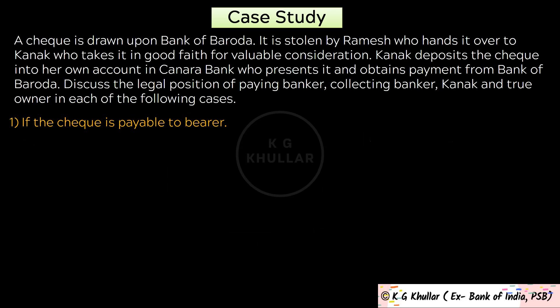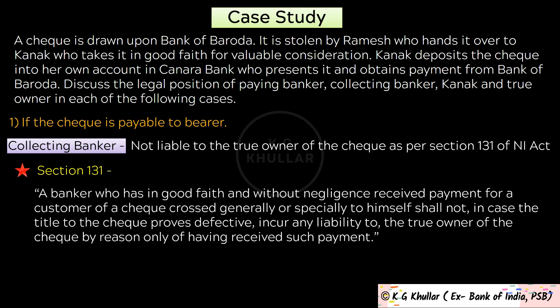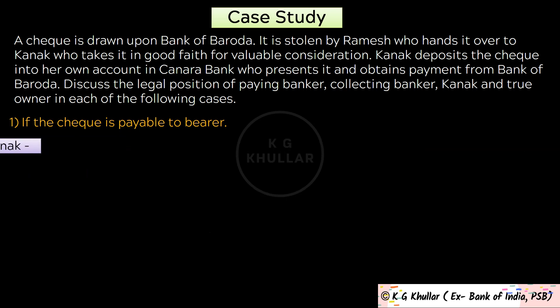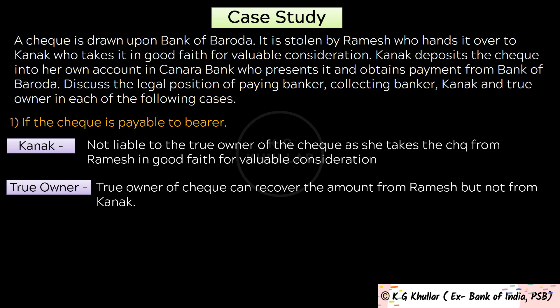The collecting banker also does not incur any liability to the true owner as per section 131. Section 131 of the Negotiable Instruments Act deals with non-liability of a banker receiving the payment of a check, and states that a banker who has in good faith and without negligence received payment for a customer of a check crossed generally or specially to himself shall not, in case the title of the check proves defective, incur any liability to the true owner. Kanak, who takes the check from Ramesh in good faith for valuable consideration, is therefore not liable to the true owner. The true owner can recover the amount from Ramesh only, but not from Kanak.